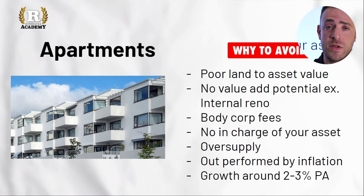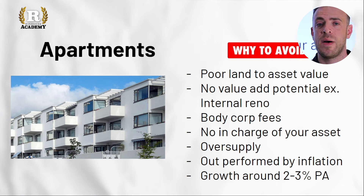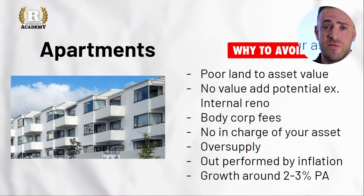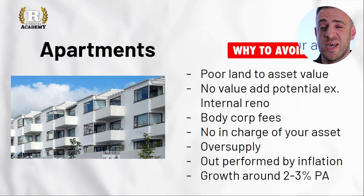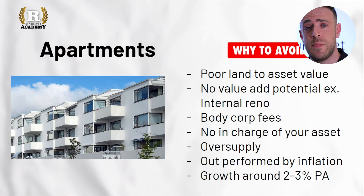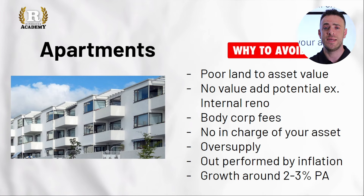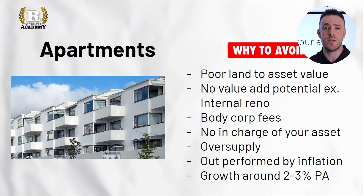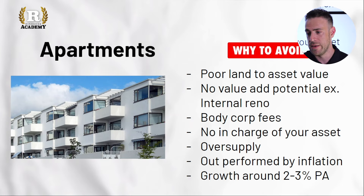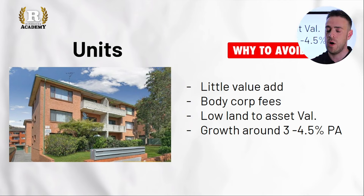I have a real-life client example: they bought two properties in Melbourne around the same time — a brand new apartment in Cremorne or Richmond, and a four-bedroom home in Lysterfield, at roughly the same price. Today, the apartment is in the low-to-mid $700K range, yet the home they're living in is closer to $2.5 million. So for me, the number one no-go is apartments.